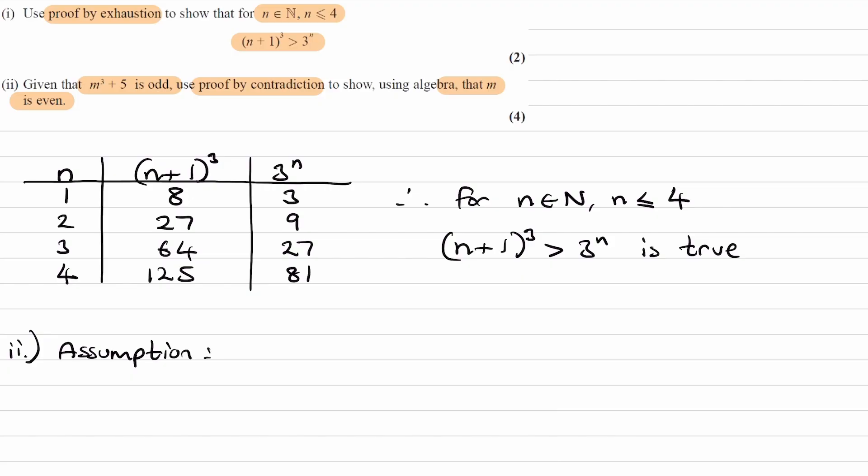So, the negation of what we're trying to prove, well, let's first look at what we're trying to prove. If m cubed plus 5 is odd, then m is even. So the opposite of this statement, the negation of this statement would be, if m cubed plus 5 is odd, then m is also odd. So that's our starting point. We're then going to mathematically disprove this, and if this is not true, then that means the original statement must be true.